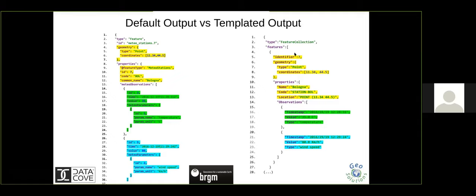What our data modeling team came up with is a more compact, more readable, and directly usable output format. We want to concatenate the code using a station prefix, include the location as a WKT string, and for the observations we want to see the value with the right unit directly — effectively eliminating one nested level. This is the output format we want.